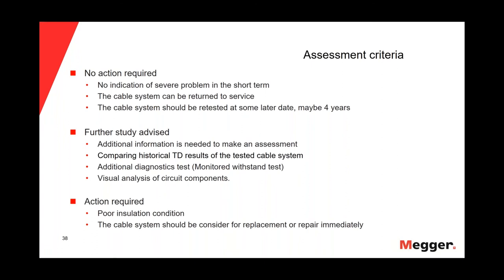Action required means we have a poor insulation condition and the cable system should be considered for replacement or repair immediately. What is very important to know: we should never make a decision — especially never decide to replace a cable — based on a first-time tan delta measurement. We always need to wait for at least two or three measurements before making a decision.